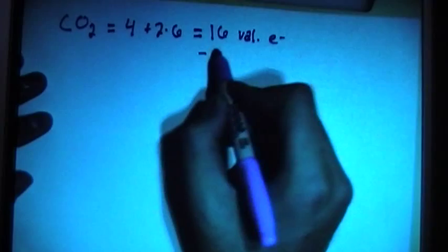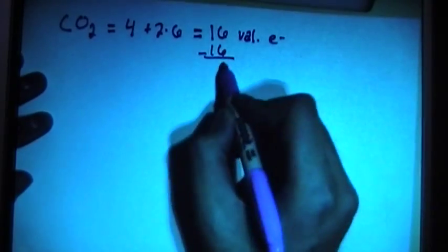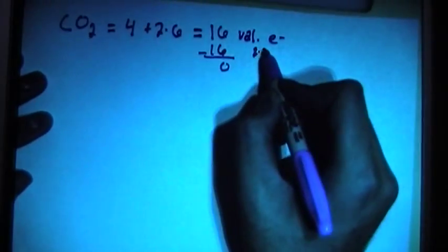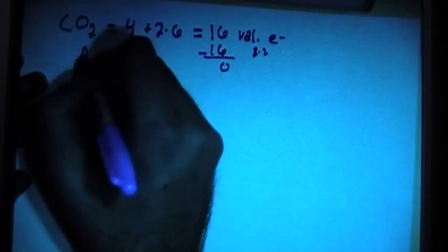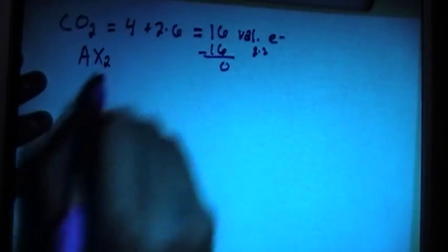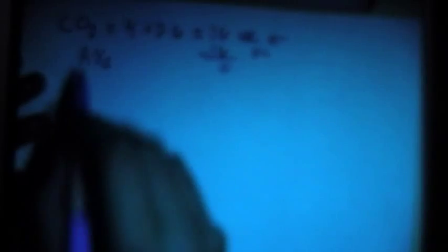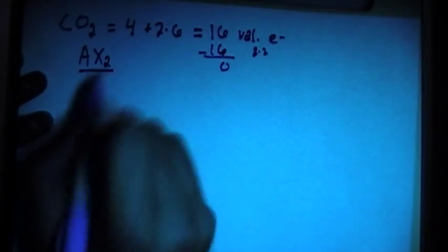Okay, so now let's go ahead and subtract out the largest multiple of 8, which is going to be 16. So I get a 0, and that's 8 times 2. So this is going to end up being an AX2 molecular shape.